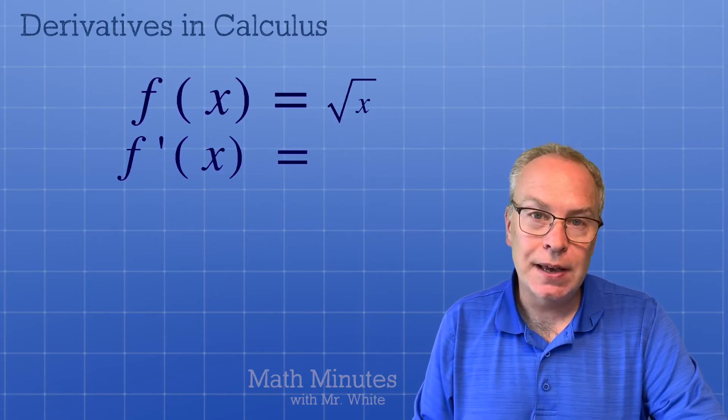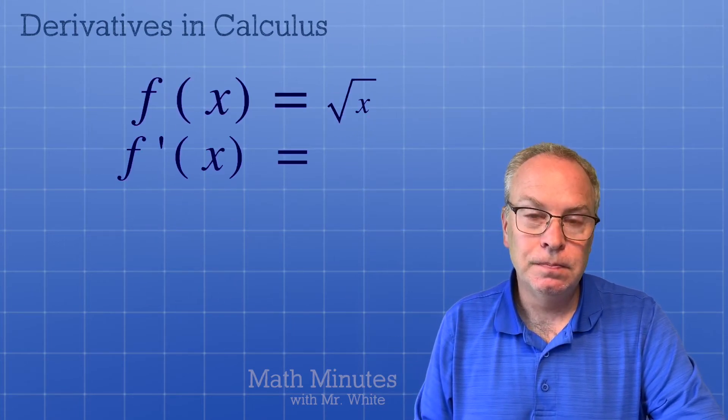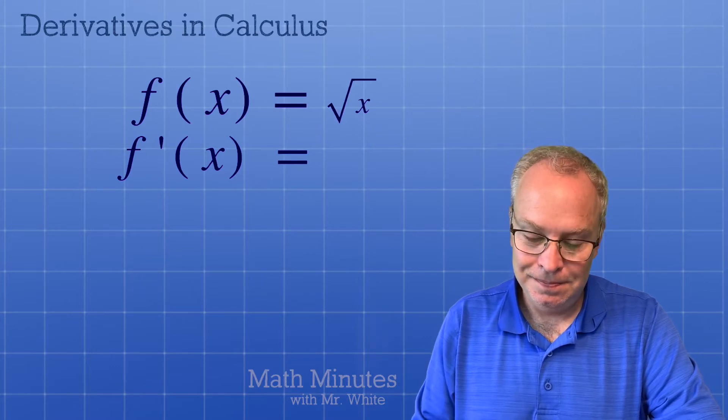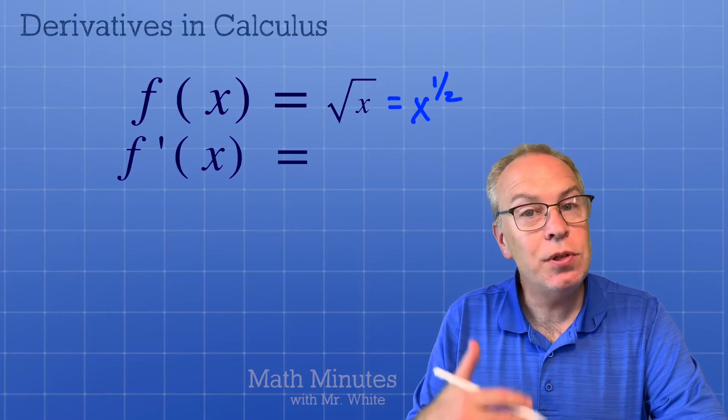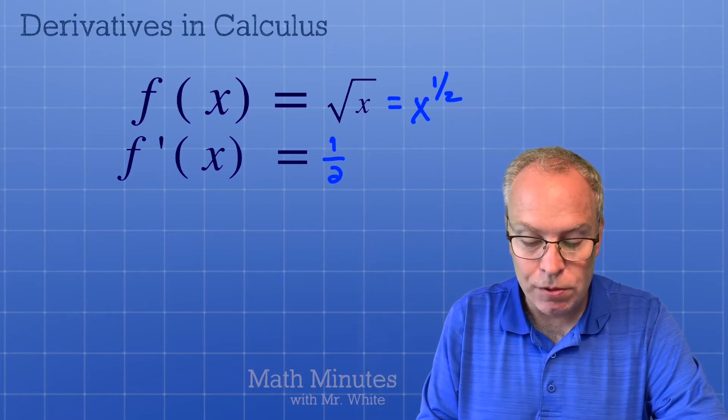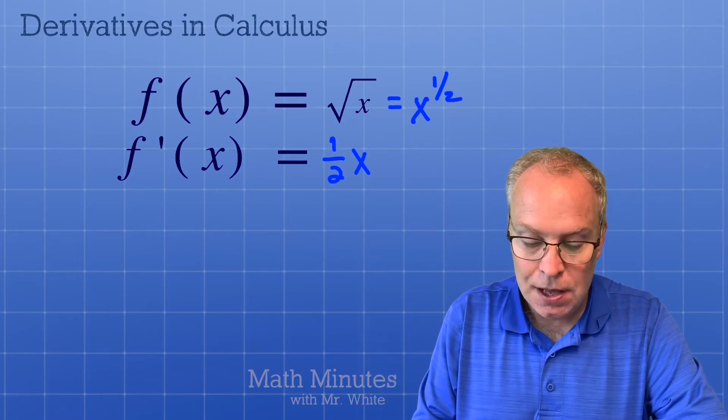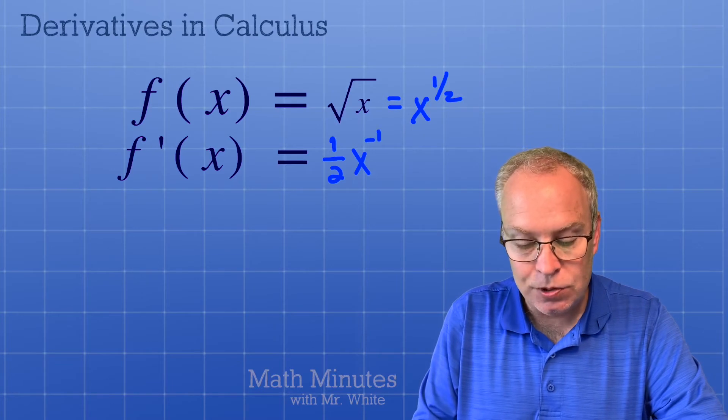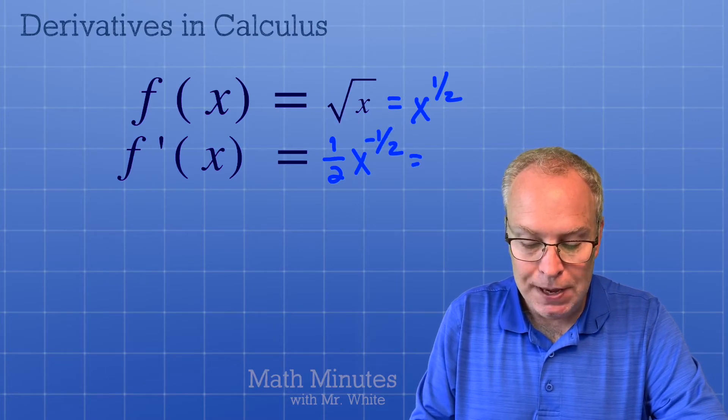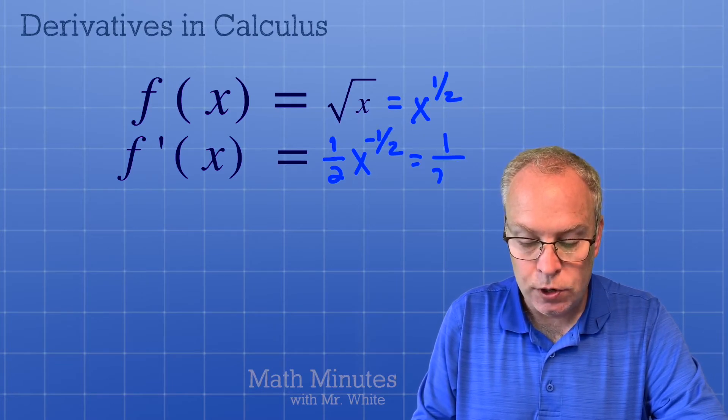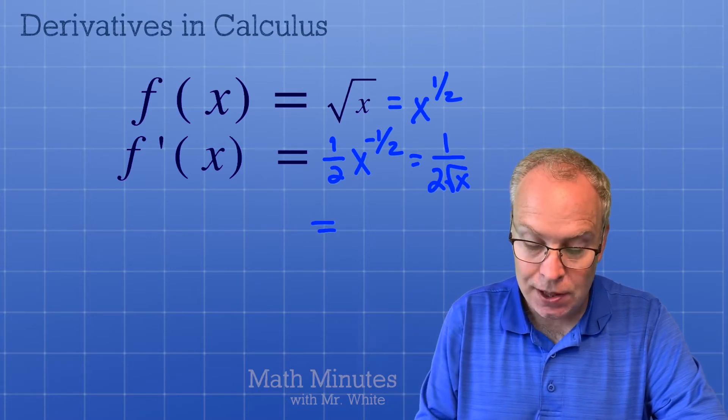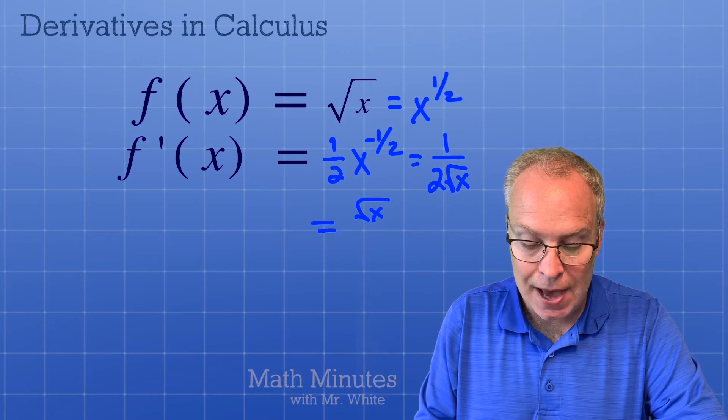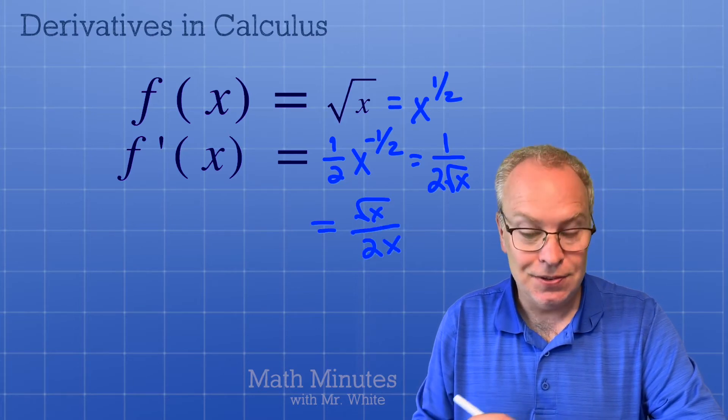What's the derivative of the square root of x? Again, let's write this as an exponent so that we can do the power rule. I'm going to throw that exponent out front, base stays the same, exponent goes down by one, which means we could write it as 1 over 2 times the square root of x, which if you rationalize that would be the square root of x over 2x.